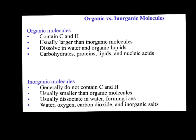In chemistry, organic means it's a molecule that contains carbon and hydrogen — it is a carbon-based molecule. Hydrogen is important too, but the biggest thing is that it's carbon-based. That is the key to being organic. Organic molecules are usually fairly large and they usually dissolve in water or organic liquids like alcohol or ethanol.